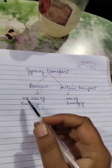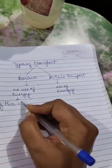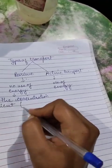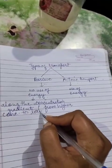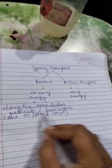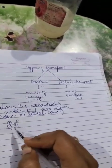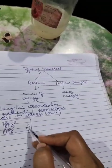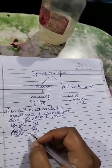Now, one more thing — in passive transport, the molecules transfer along the concentration gradient. Along the concentration gradient means from higher concentration to lower concentration. Like this is a cell or a container where molecules are higher on one side and lower on the other, so the molecules will transfer from higher concentration to lower concentration.